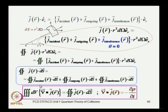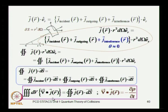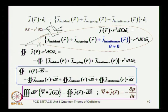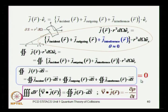This surface integral over a closed surface is given by the volume integral of the divergence of the current density vector — this is just Gauss's divergence theorem. By Gauss's divergence theorem, the left-hand side is the volume integral of the divergence, which for a stationary state (∂ρ/∂t = 0) vanishes. Therefore this entire surface integral identically goes to 0.